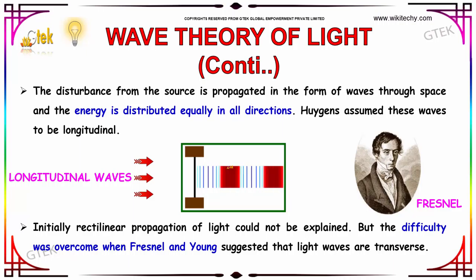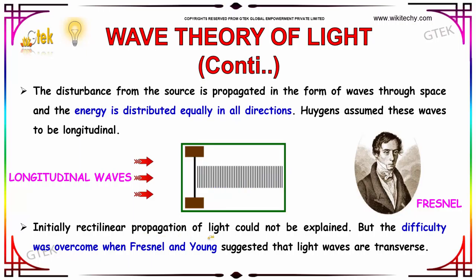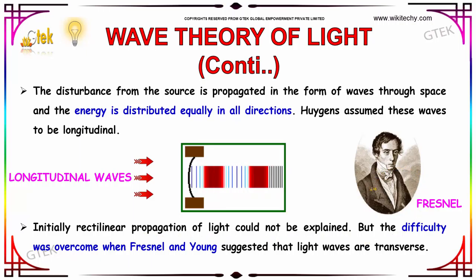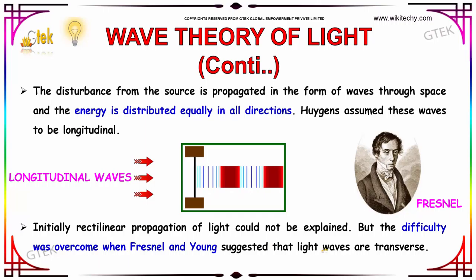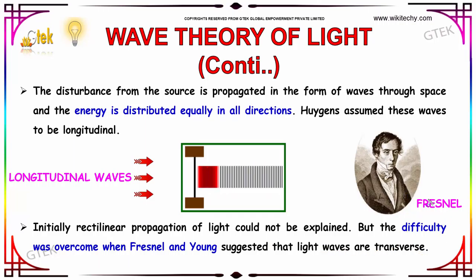Huygens assumed that these waves needed to be longitudinal. You can see the longitudinal waves here. Initially, rectilinear propagation of light could not be explained. But the difficulty was overcome by Fresnel and Young, and they suggested that the light waves are transverse waves. So Fresnel suggested them as transverse waves.